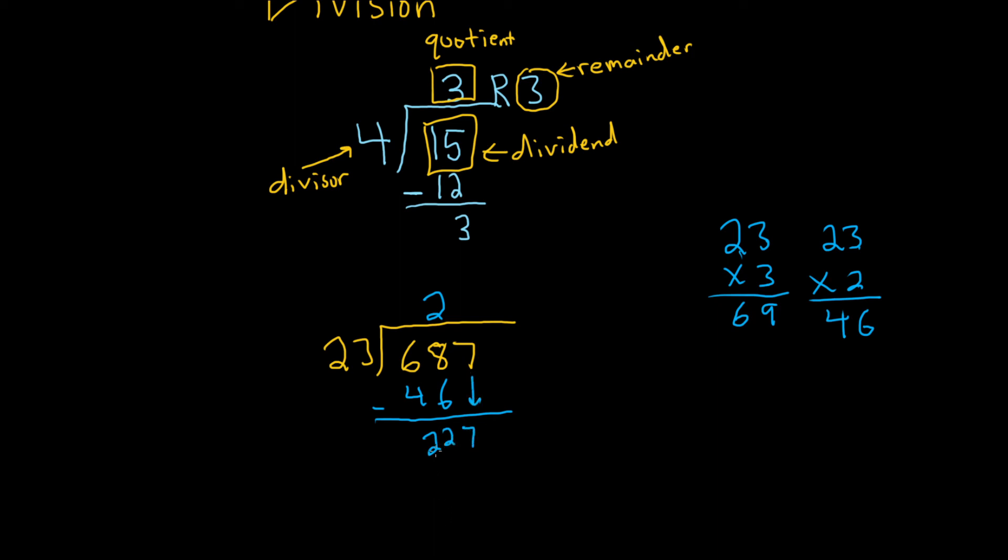And now you ask the same question, how many times does 23 go into 227? Well, if you do 23 times 10, and you work it out and you go through it, you'll get 230. So it's a little bit too big, so let's try something smaller.